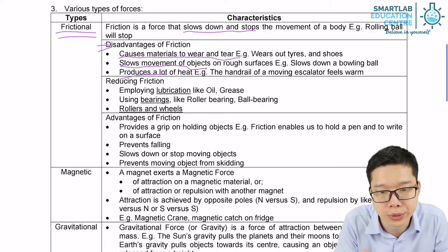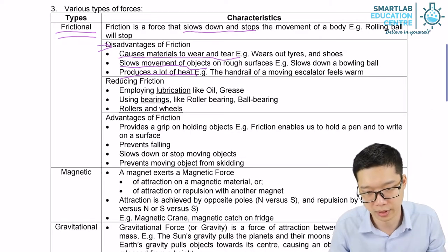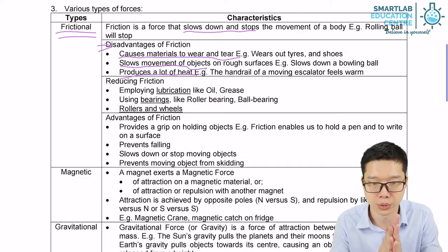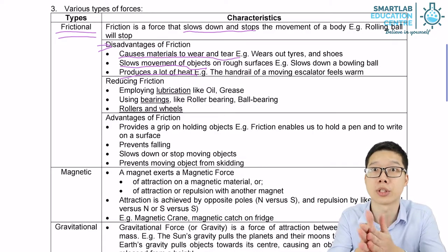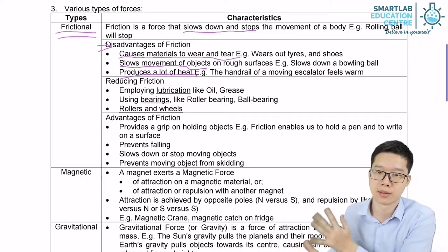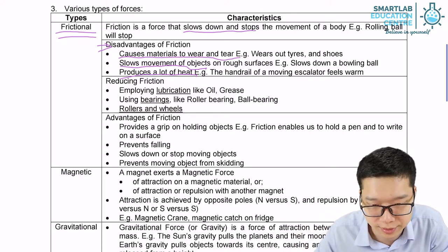And lastly, it produces a lot of heat. For example, when you are rubbing your palms, when you are rubbing your hands, you can feel the temperature going up. You can feel the heat. That's the production of heat.